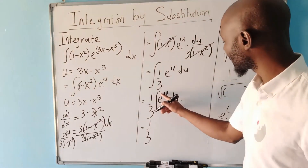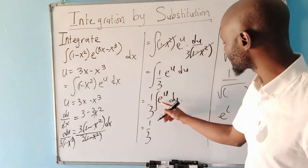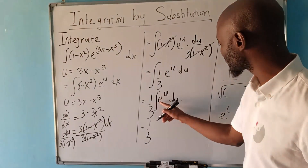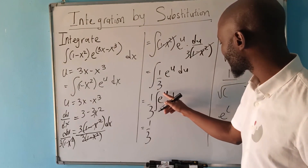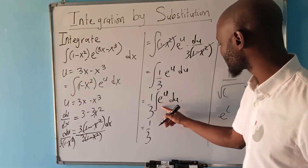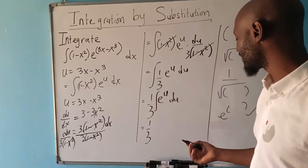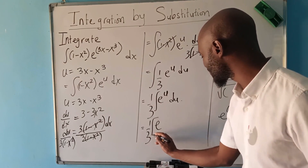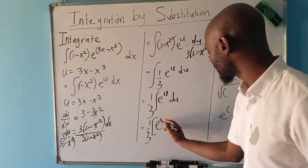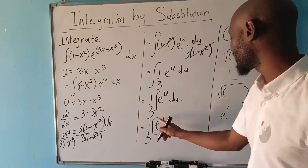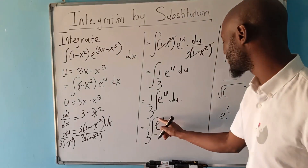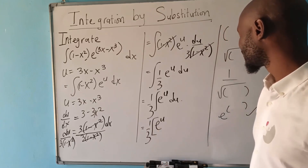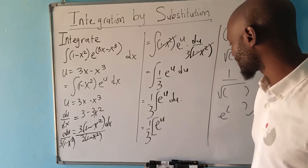If we had another number in the exponent — for instance if it were e^(2u) — we would divide by 2. But in this case there is a 1 there, so even if we divide by it, there is no change. So integrating (1/3)e^u gives us (1/3)e^u.